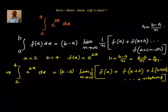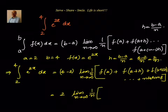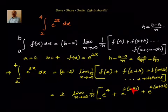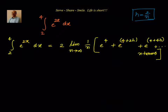The next step: 4 − 2 = 2, so we have 2 times limit n tends to infinity, (1/n) times [e power 4 + e power 2(2+h) + e power 2(2+2h) + ...], because f(2+h) means substituting (2+h) in place of x in e power 2x. We continue for n terms.